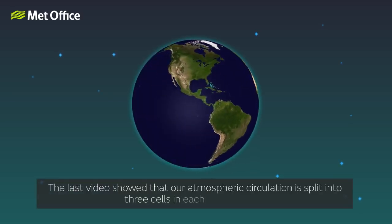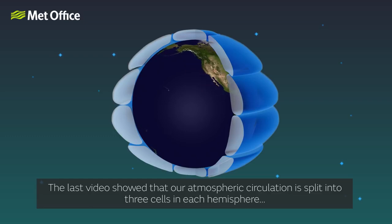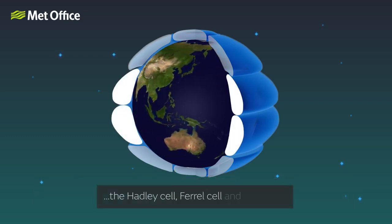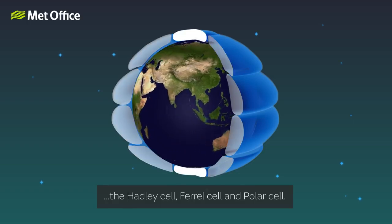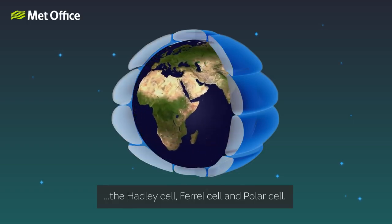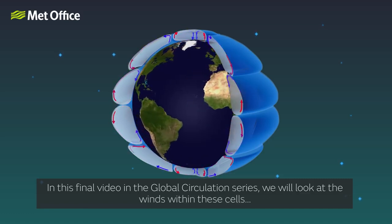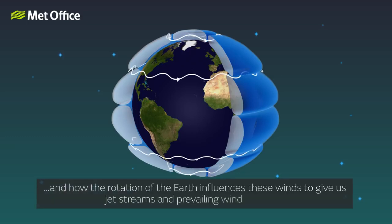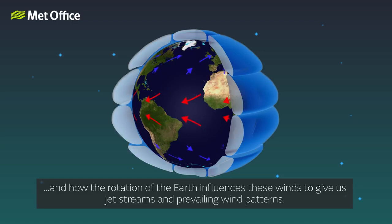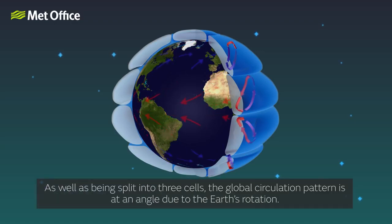The last video showed that our atmospheric circulation is split into three cells in each hemisphere: the Hadley cell, Ferrell cell, and polar cell. In this third video in the global circulation series, we will look at the winds within these cells and how the rotation of the Earth influences these winds to give us jet streams and prevailing wind patterns. As well as being split into three cells, the global circulation pattern is at an angle due to the Earth's rotation.